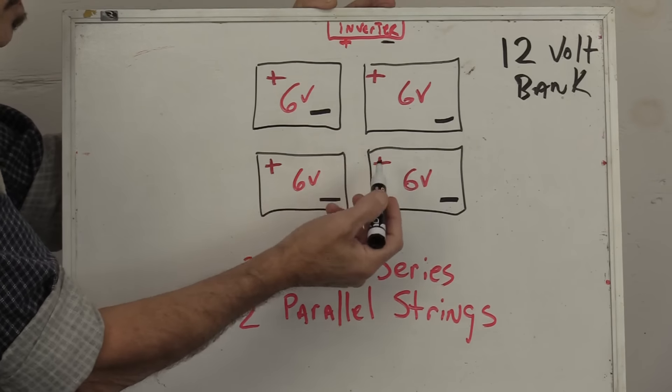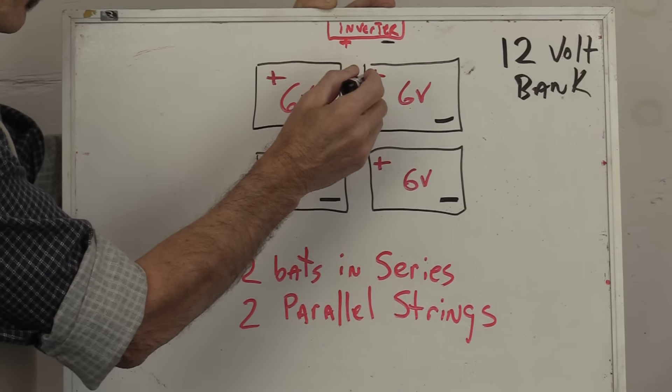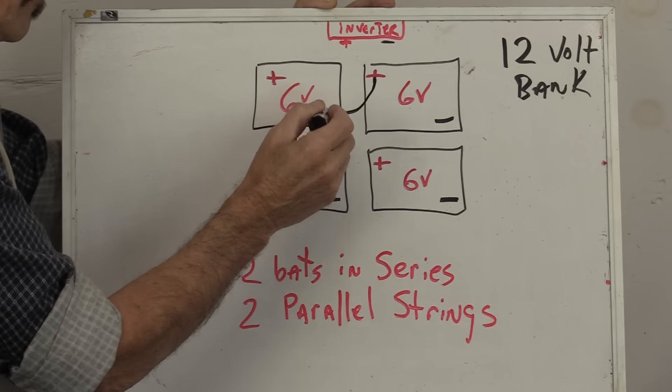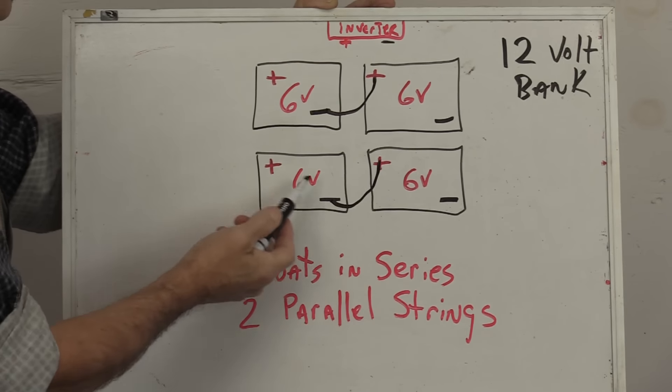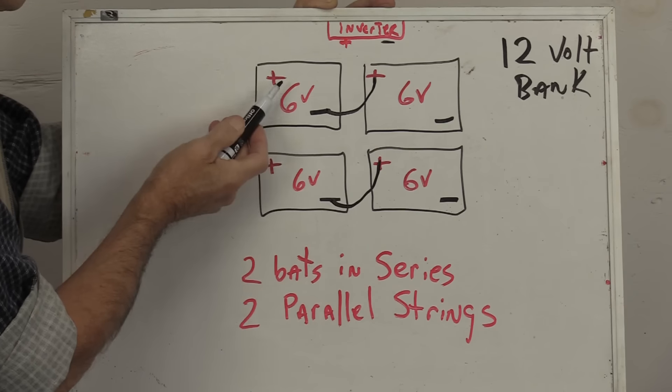Here's your six volt batteries. Take your positive, hook it to your negative. Positive, hook it to your negative. Now you have two 12 volt battery banks.